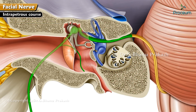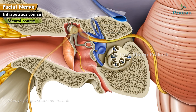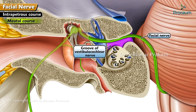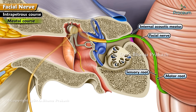Intrapetrous course: it is divided into two parts, the meatal part and the facial canal. Meatal course: the facial nerve is lodged in the groove of the vestibulocochlear nerve. Initially, both the motor and sensory roots lie separate; as the nerve reaches the bottom of the internal acoustic meatus, both roots join to form a single nerve.